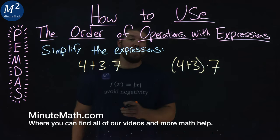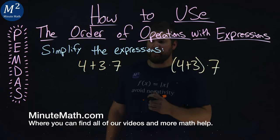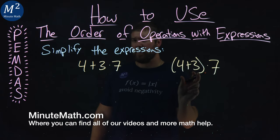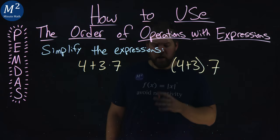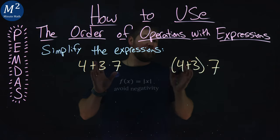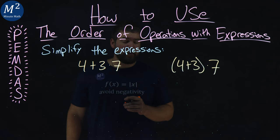We're given two expressions here that we need to simplify: 4 plus 3 times 7, and then 4 plus 3 in parentheses times 7. We're going to use our order of operations, PEMDAS here, to solve or simplify each one of these individually and see how they differ.